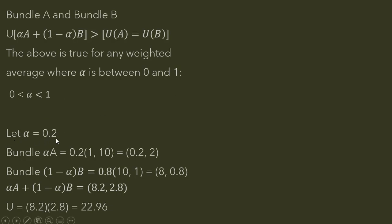Alright, so let's try alpha equals 0.2. So take Bundle A, which was 1 and 10, and now multiplying 0.2 times 1, we get 0.2 and 0.2 times 10. And then let's take the 1 minus alpha and multiply that by what's in Bundle B. So 1 minus alpha, where alpha is 0.2, is going to be 0.8. So 0.8 times 10 is 8, and 0.8 times 1 is 0.8.